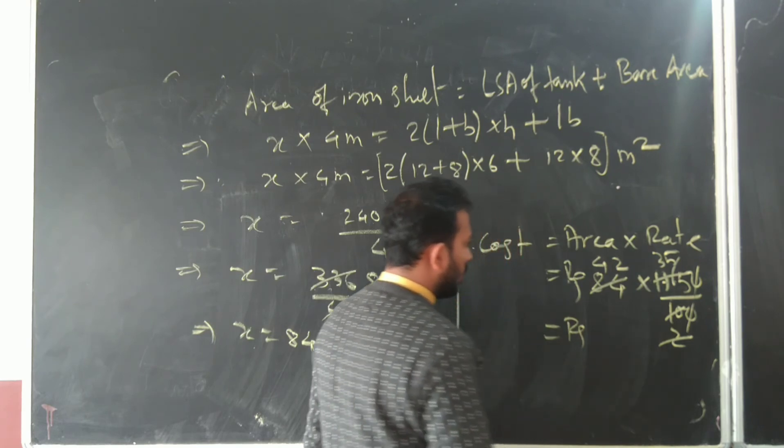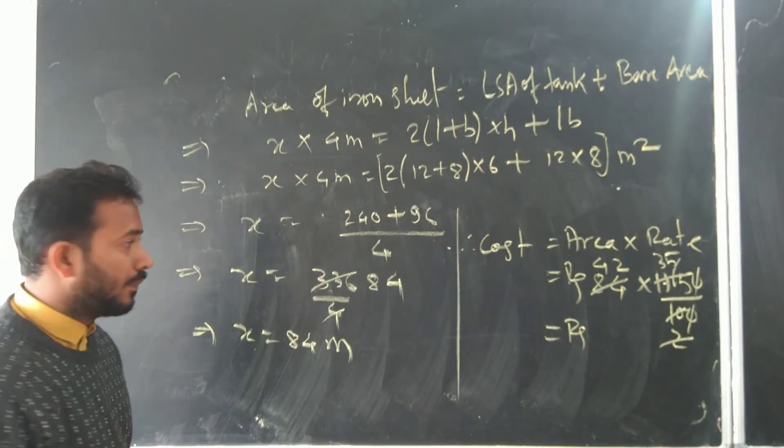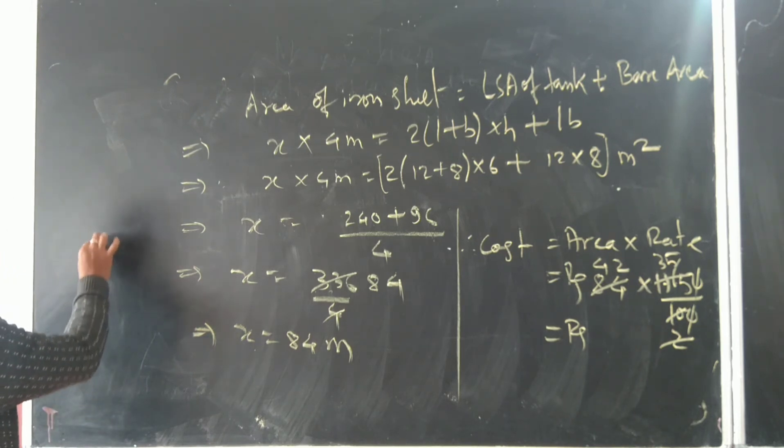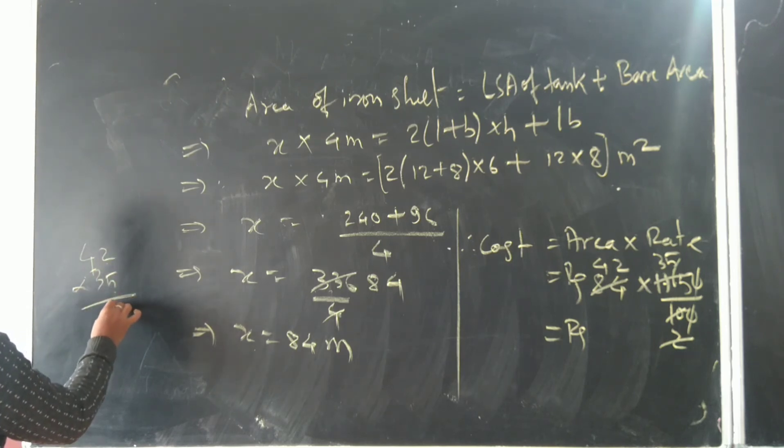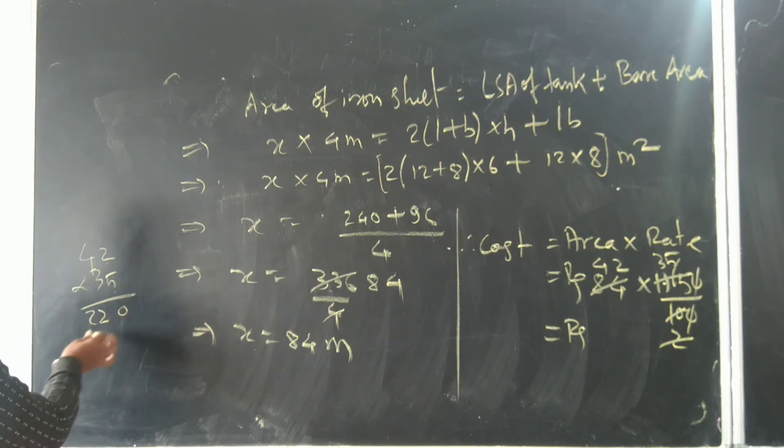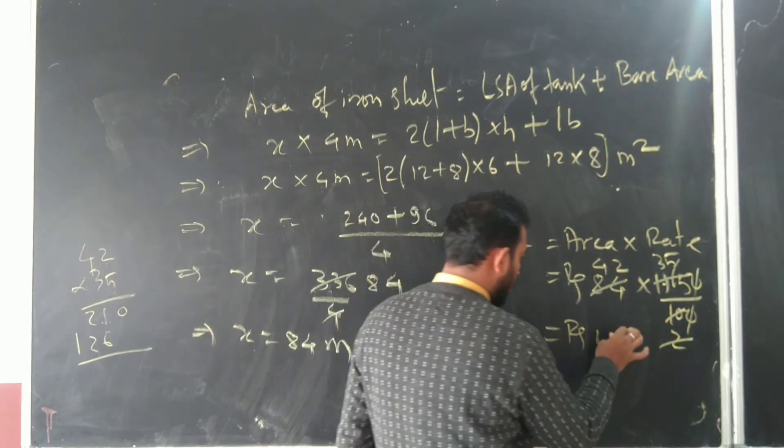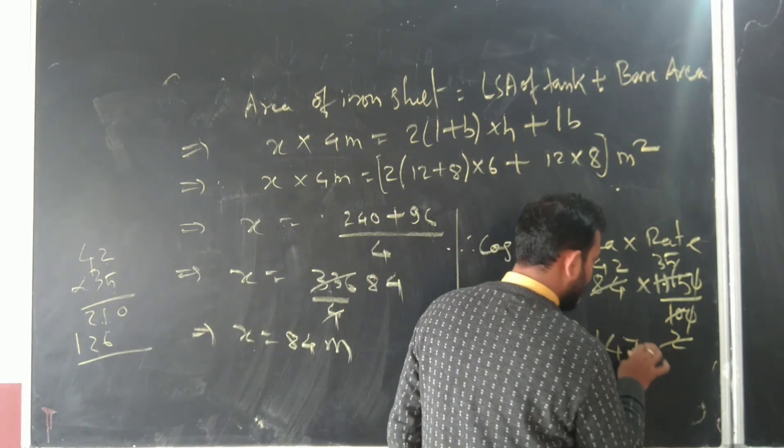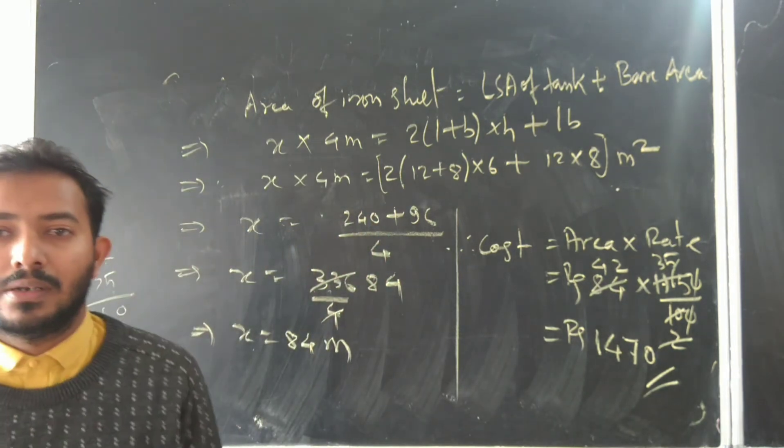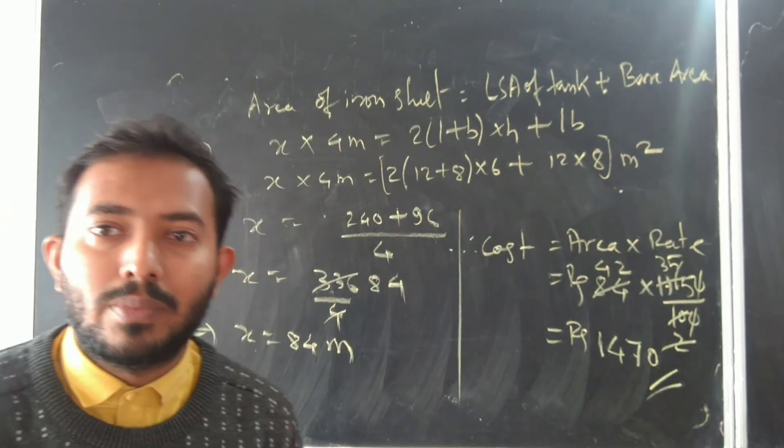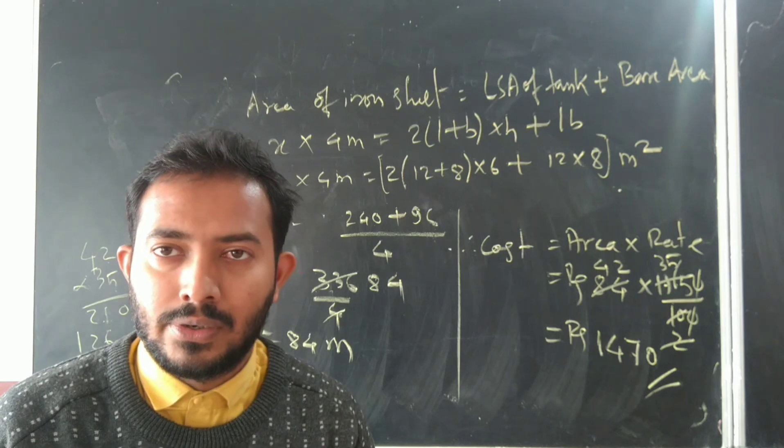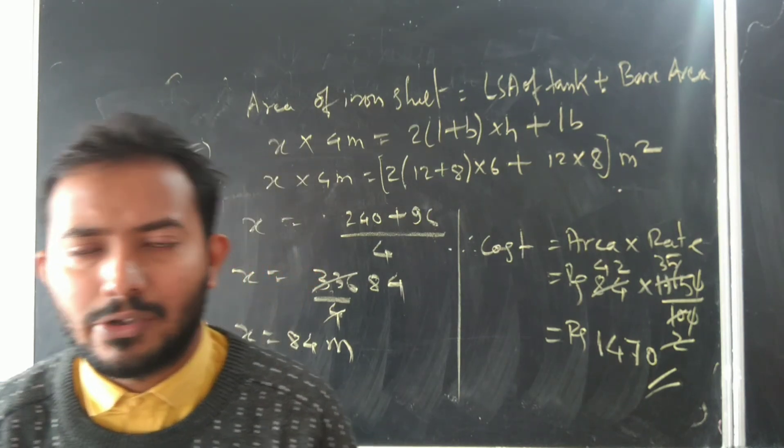We multiply. After canceling, we get 25 times 42. Calculating in rough: 42 times 5 is 210, 42 times 20 is 840, total 1050. This is the cost to make this iron tank. I hope you have understood. We'll see another question.